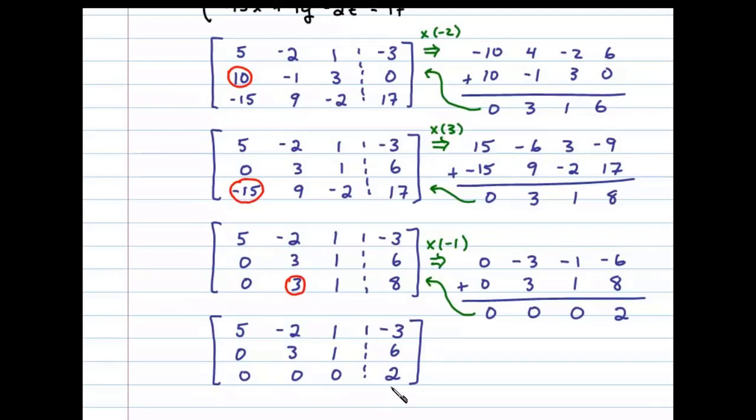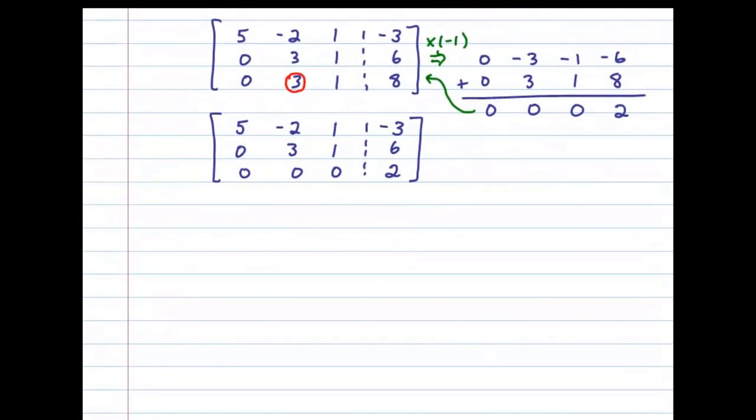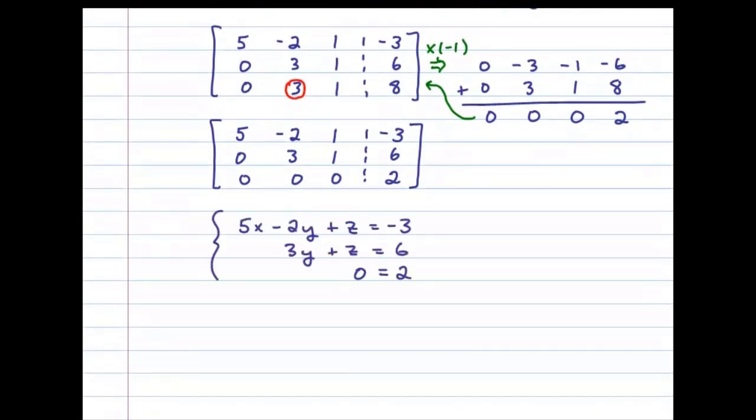This is apparent if we write this as a linear system. You can see that we have an equation 0 = 2, which is false. This tells us that this linear system is inconsistent and that there is no solution.